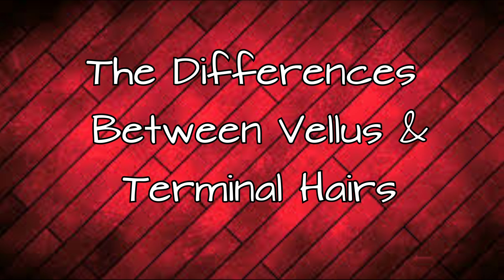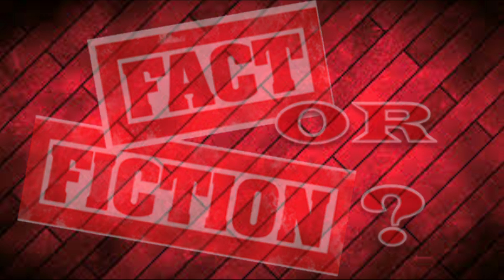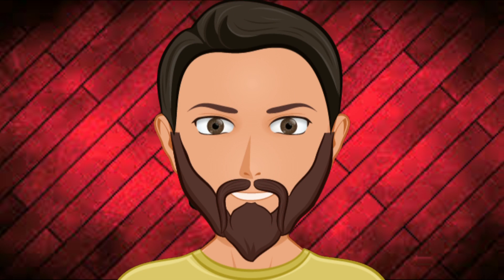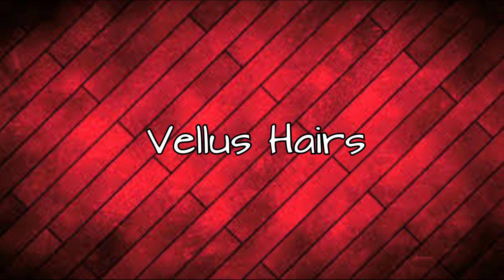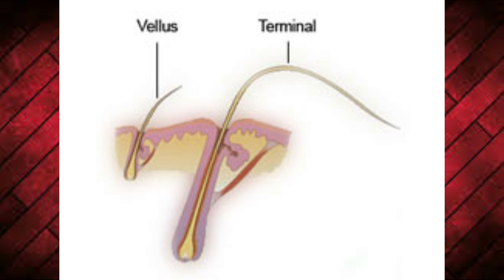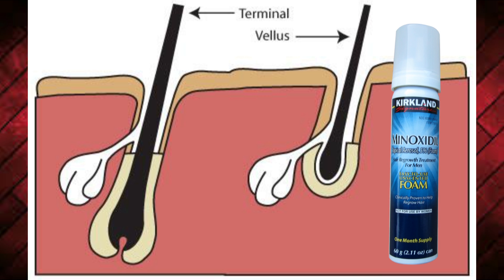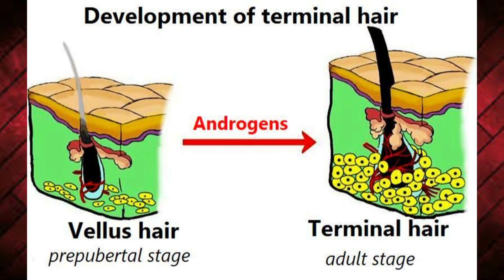Now let's look at the difference between vellus hairs and terminal hairs, and in this section I aim to dispel a few myths that often get floated around the minoxidil beard community. Vellus hairs are short, thin, barely noticeable hairs. They lack pigmentation generally — they're in fact translucent, though a lot of people refer to them as blonde. They don't grow beyond about two millimeters in length naturally. The vellus hair follicle itself is not connected to the sebaceous gland like a terminal hair is.